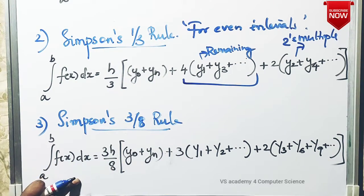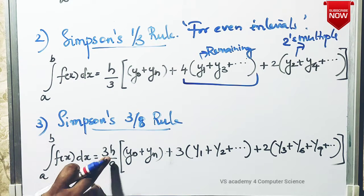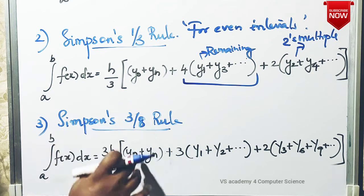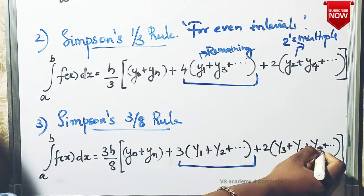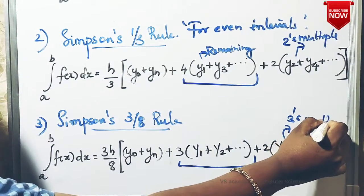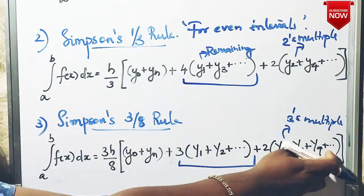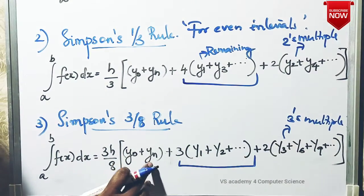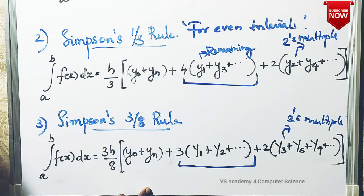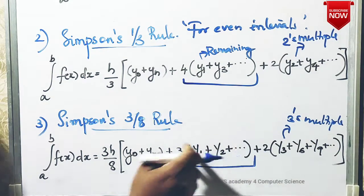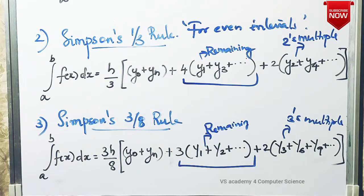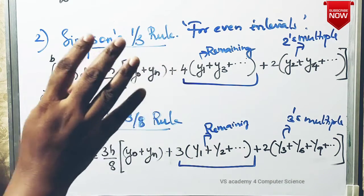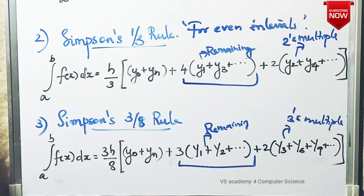The last one is Simpson's three-eighth rule. The formula is: integral from a to b of f of x dx equals 3h by 8 into [(y0 plus yn) plus 3 times the remaining terms that are not multiples of 3 (y1, y2, y4, y5...) plus 2 into the multiples of 3 (y3, y6, y9...)]. Simpson's three-eighth rule applies when the number of intervals is a multiple of 3.